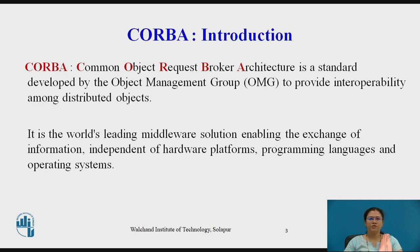First we will see the introduction — what is the meaning of CORBA. CORBA is a Common Object Request Broker Architecture. It is a standard developed by the Object Management Group (OMG) to provide interoperability among distributed objects. The aim of CORBA is to make better use of distributed systems, to use object-oriented programming, and to allow objects in different programming languages to communicate with each other. It is the world's leading middleware solution, enabling the exchange of information independent of hardware platforms, programming languages, and operating systems.